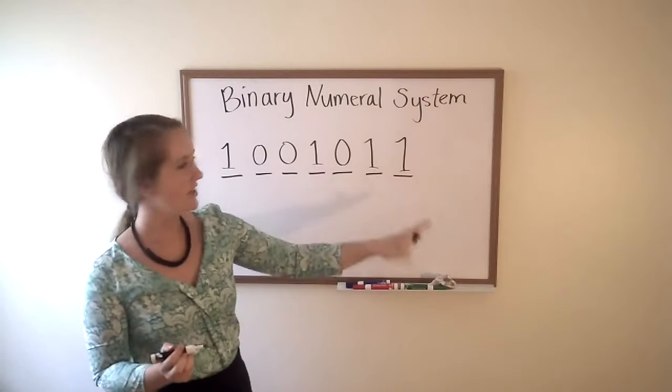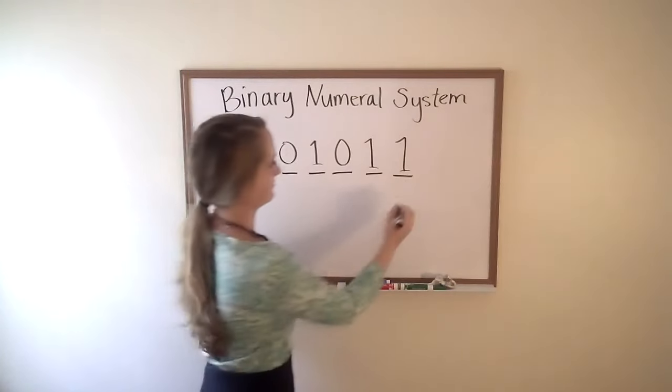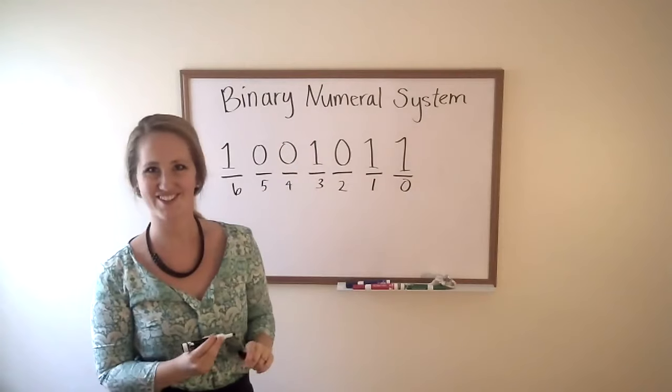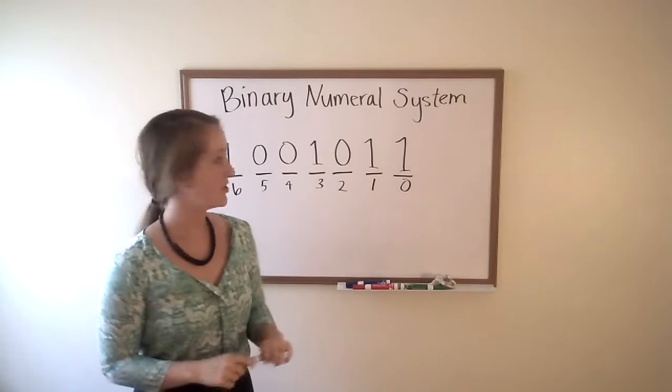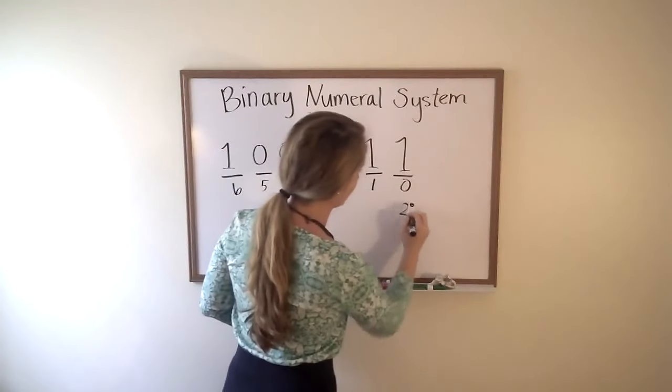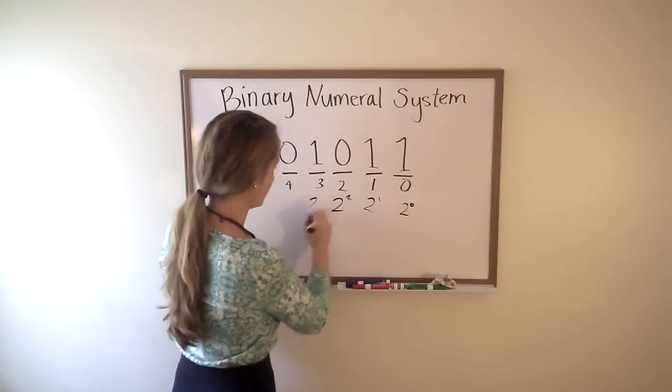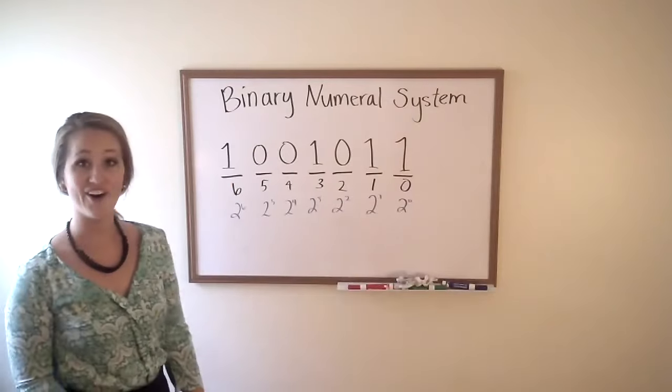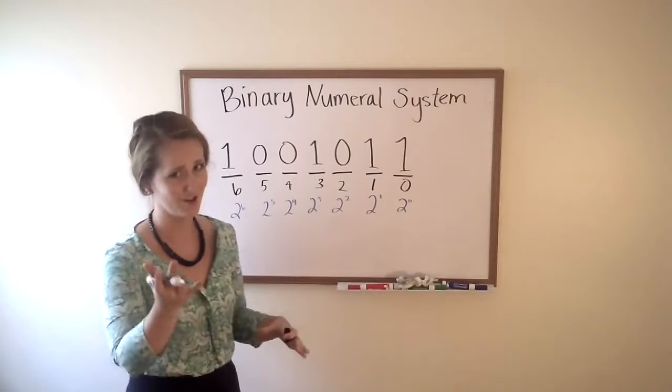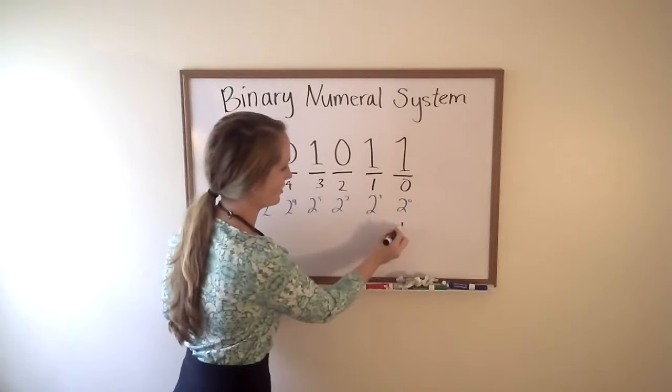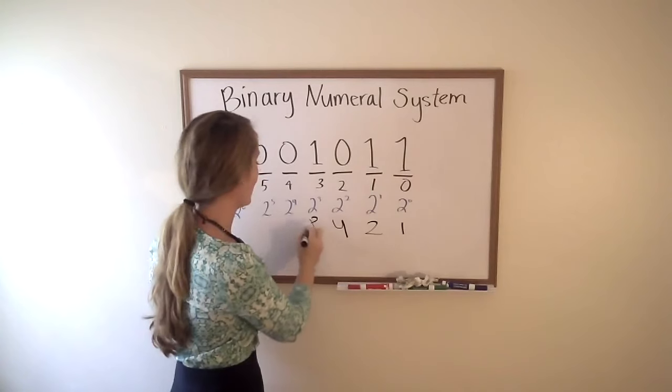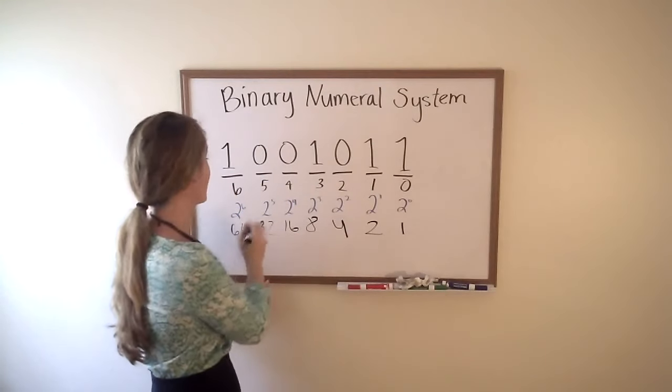We're going to start by labeling starting backwards how many numbers there are. This will be zero, one, two, three, four, five, six. Pretty straightforward so far. The next step that we're going to do is take two to the power of whatever place it is. So here it'll be two to the zero, two to the one, two to the two, two to the three, you get the picture. All right, now that we've got the two to the given power figured out, all we got to do is fill in some blanks and we'll have our solution. Two to the zero is, you got it, one, two to the one is two, two to the two is four, and we've got eight, 16, 32, 64. And that just keeps going on and on.